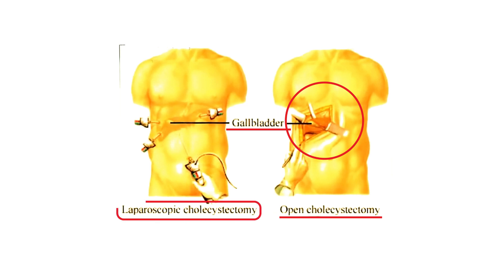A more common technique nowadays is the laparoscopic approach. Small tubes — either three or four — are inserted through tiny slits in the abdomen. The tubes have a camera that allows the surgeon to see inside on a monitor. Using cutting instruments through these tubes, they surgically remove the gallbladder, cutting it up and suctioning out the pieces, then simply stitch up the small incisions. This is the treatment of choice.